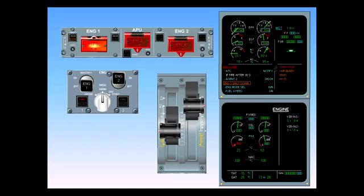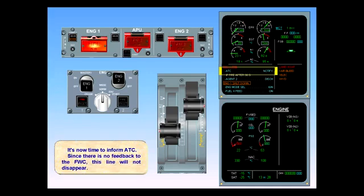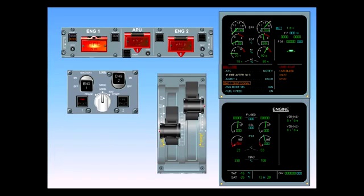It's now time to inform ATC. Since there is no feedback to the flight warning computer, this line will not disappear. All indications confirm that the fire is still burning. A second countdown now starts. This one is 30 seconds long in order to give the first agent enough response time.